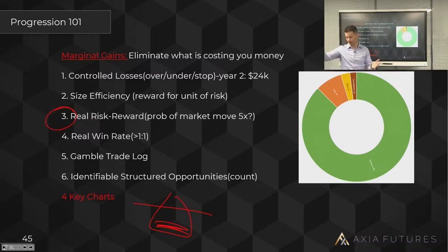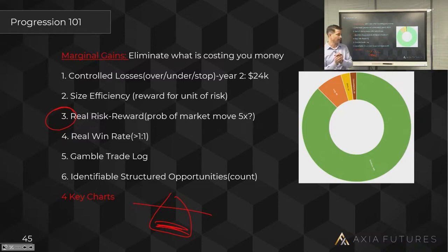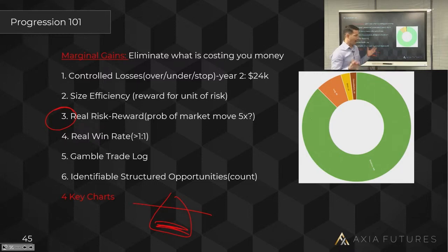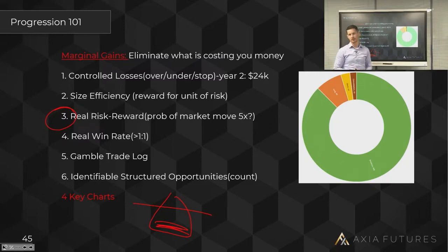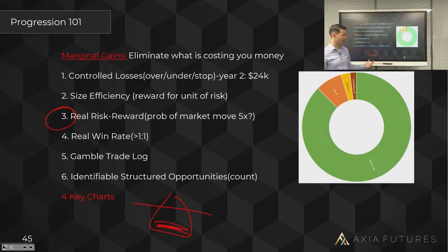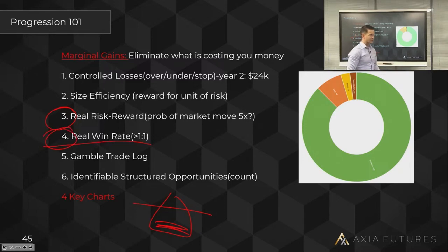If you track your last hundred trades — your risk exposure for every trade (how much you'd have lost if stopped out) versus how much you made when you won — you'll start to see your true, real risk/reward. Why does this matter? Because how often do we plan a five-to-one trade, then scale out of it and wonder why we never get to five-to-one? People say they struggle with targets — no, your real risk/reward is what it is, and if you don't know what it is, you can't solve the problem.